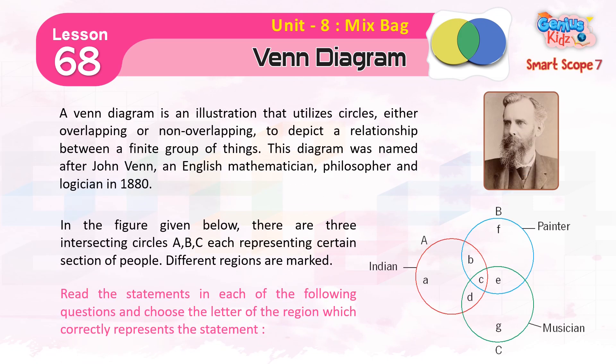A Venn Diagram is an illustration that utilizes circles, either overlapping or non-overlapping, to depict a relationship between a finite group of things. This diagram was named after John Venn, an English mathematician, philosopher and logician, in 1880.